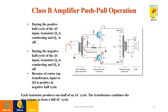So Q1 is forward biased and tries to conduct in the positive half cycle, whereas Q2 is reverse biased and there is no conduction. Similarly, in the negative half cycle, Q1 is reverse biased and Q2 is forward biased. Since Q2 is forward biased, it conducts in that cycle so that you get a full cycle at the load. This is how Class B operation works under the transformer coupled category.